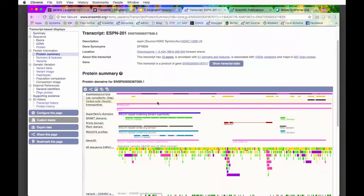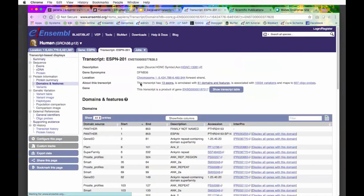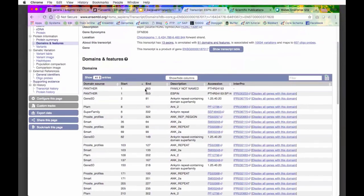This view just gives you a nice overview of what domains are where in the protein. If you're not really into graphics and you prefer tables, you can get the same data if you go to domains and features, which is directly underneath it in the menu on the left.